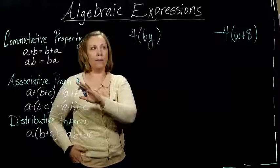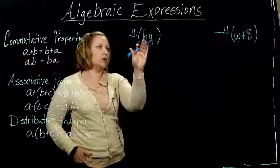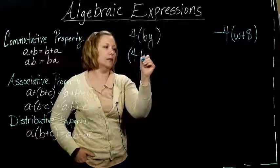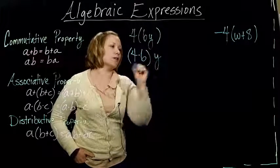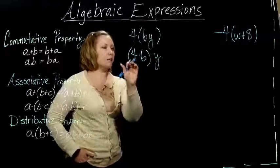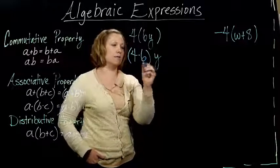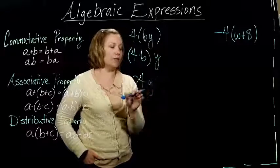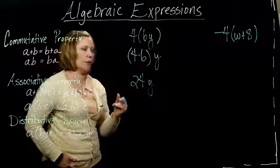The associative property says I can multiply, instead of doing the 6 times the y first, I can multiply the 4 times the 6 first, okay? And that's nice because I can do 4 times 6. 4 times 6 gives me 24, and so this guy just simplifies down to 24 times y, or 24y.